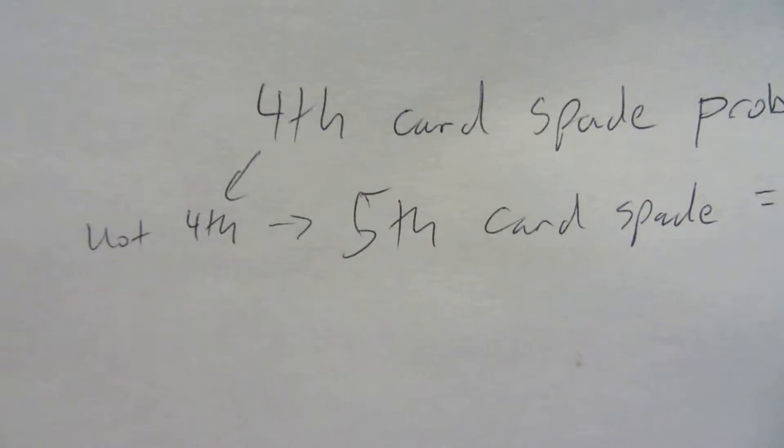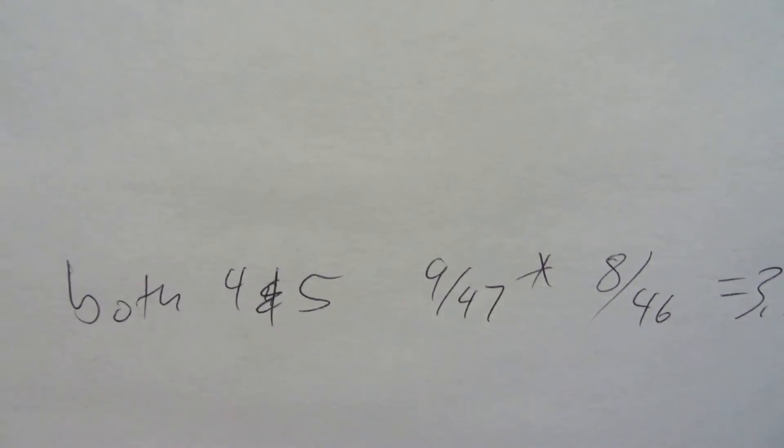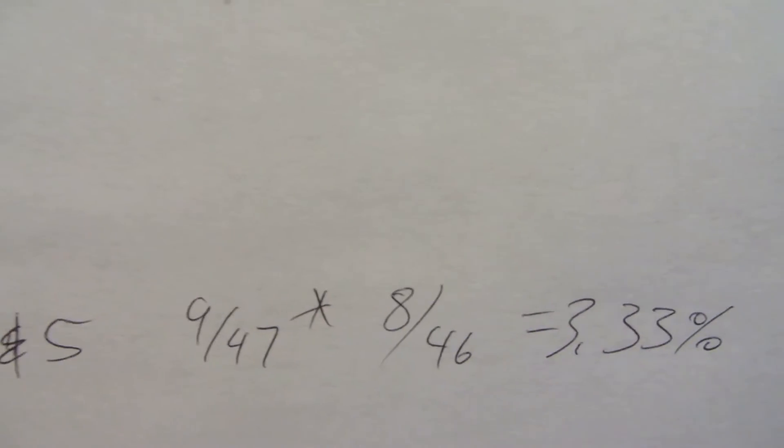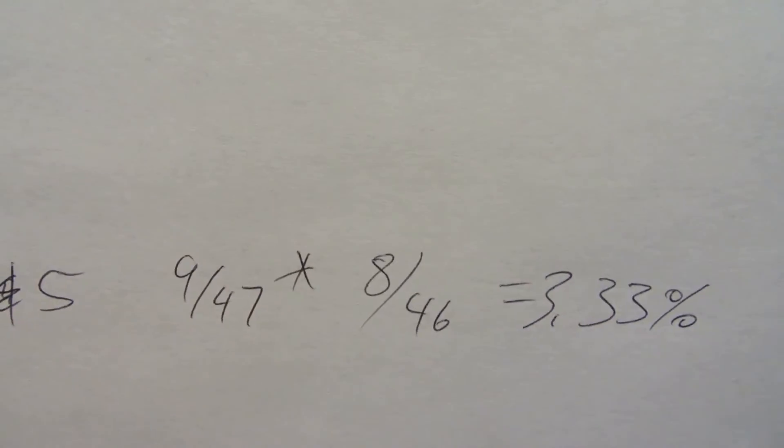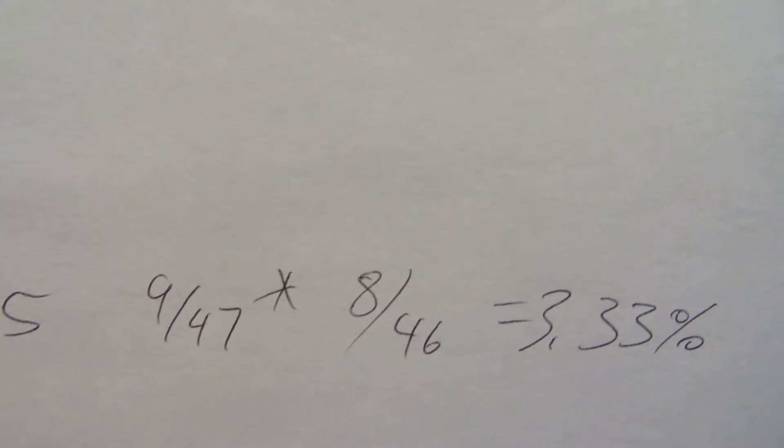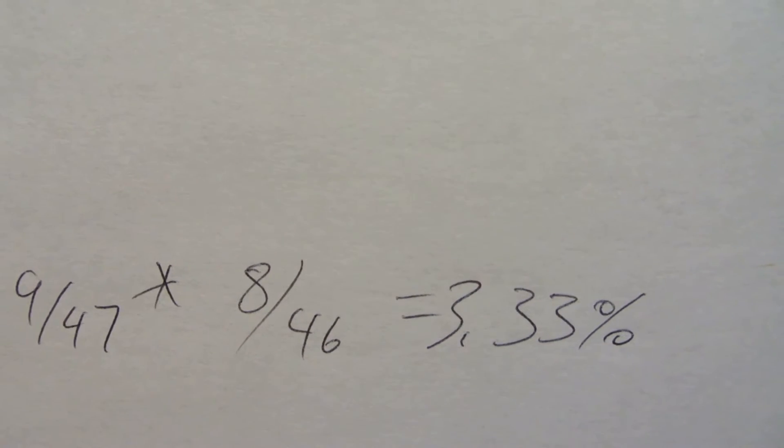The other thing we can talk about here is also the probability of hitting on both 4 and 5. So both the 4th and 5th cards could be Spades. And that would give us this probability. So 9 over 47 on that first one times 8 over 46 on the second one. So about 3.33% of the time we'll hit on both.